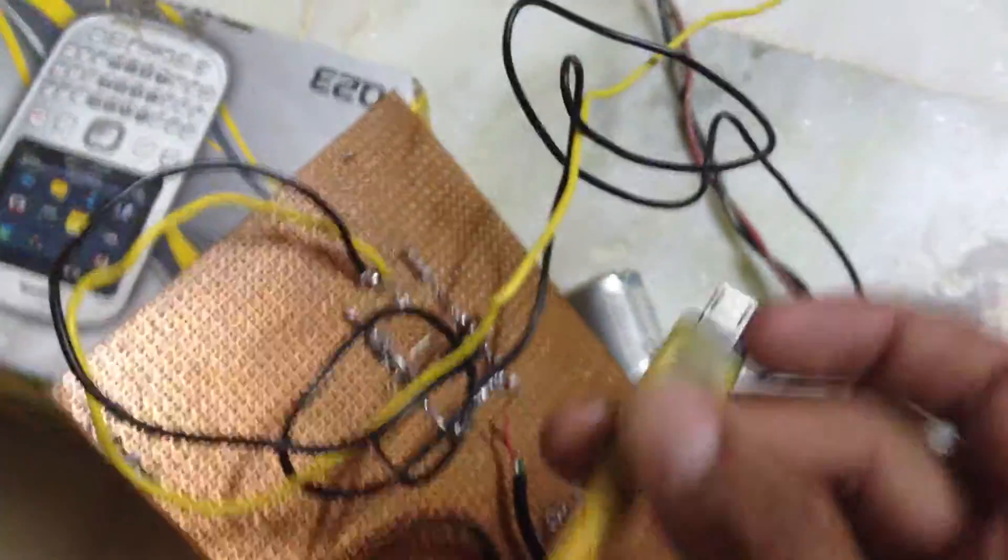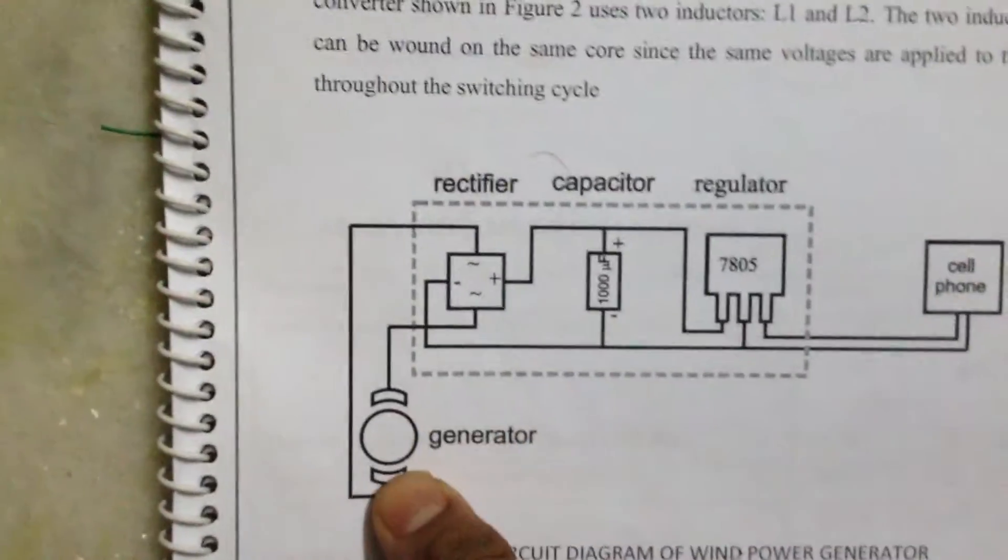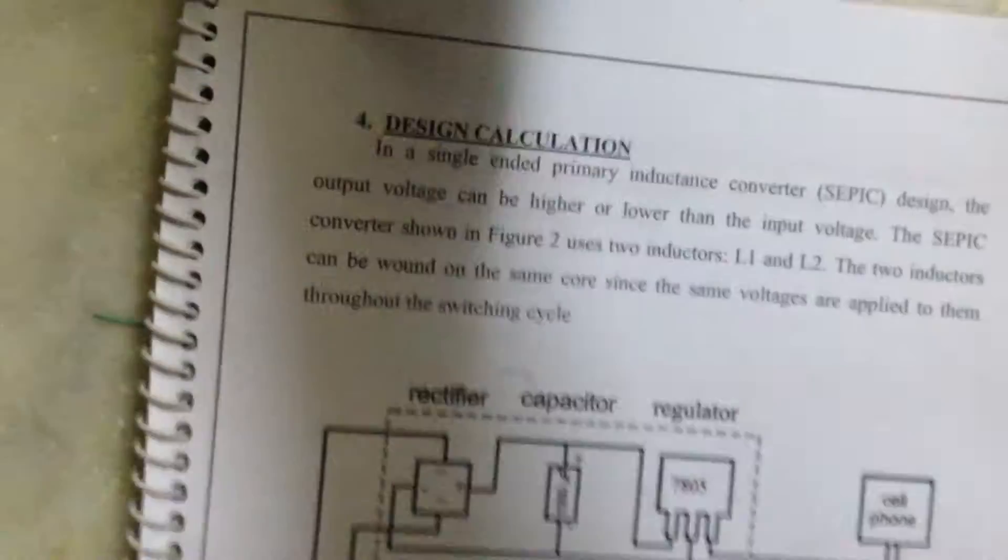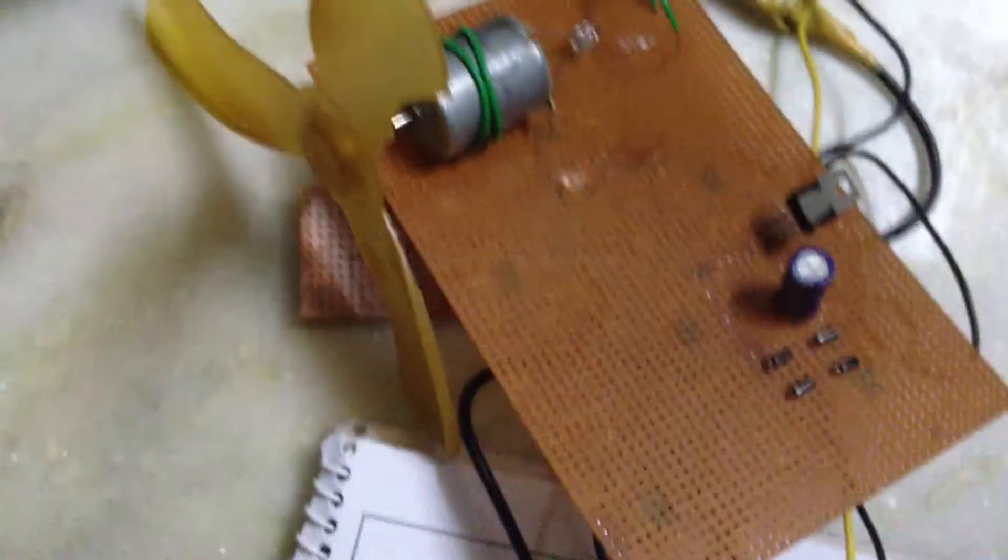So according to circuit diagram, the generator is driven by the fan. So this is the fan and it has to rotate it, and it is connected to generator.